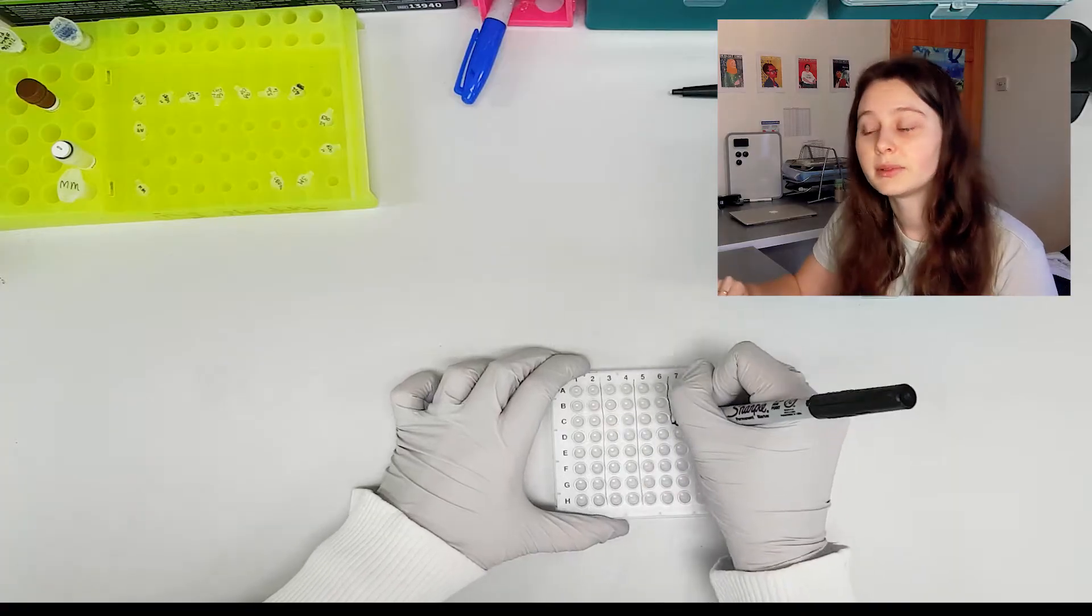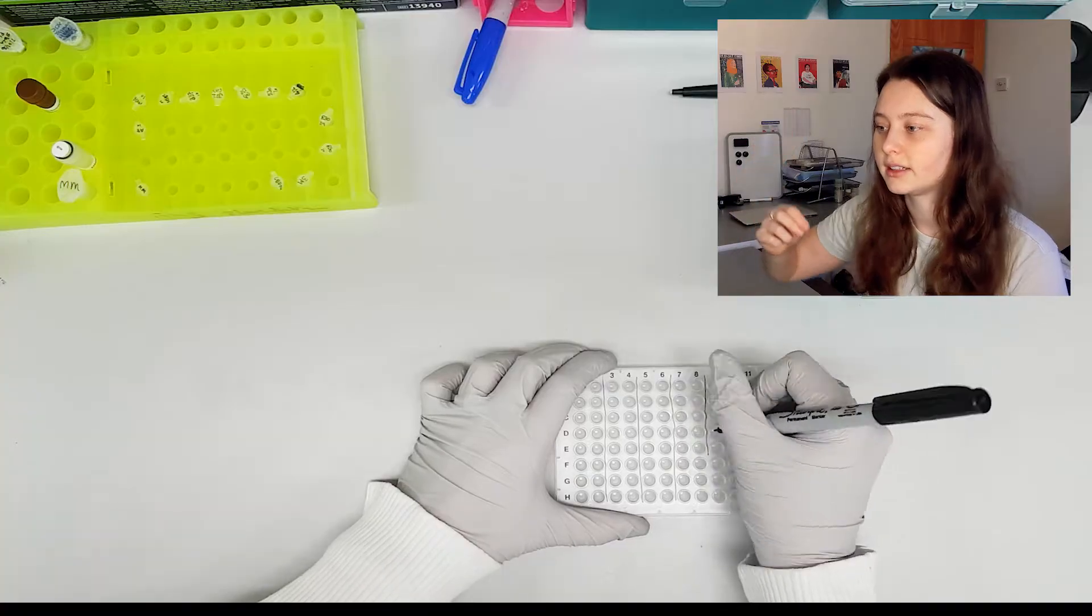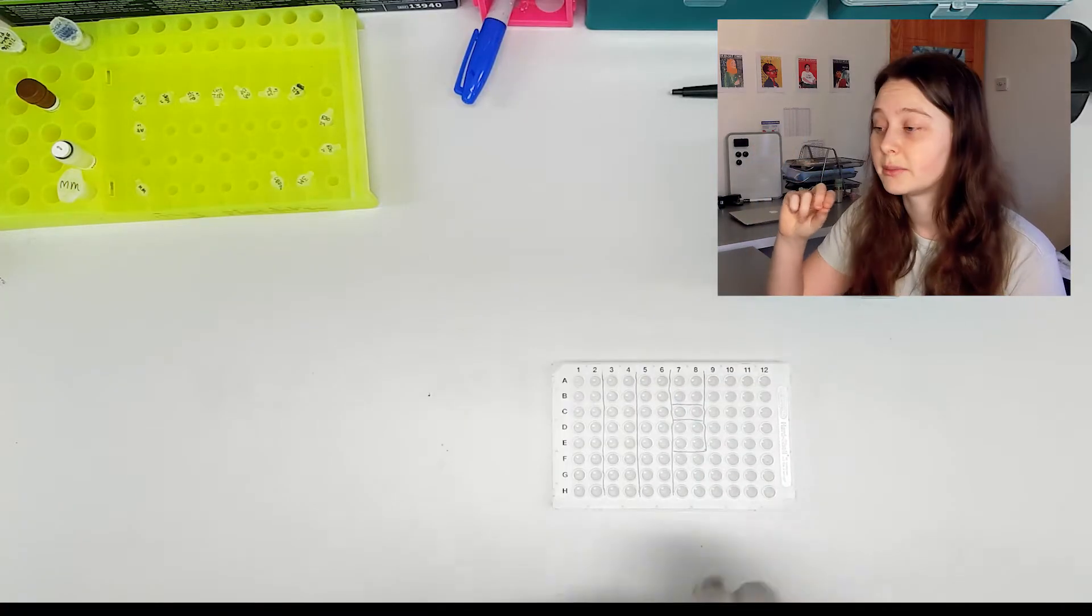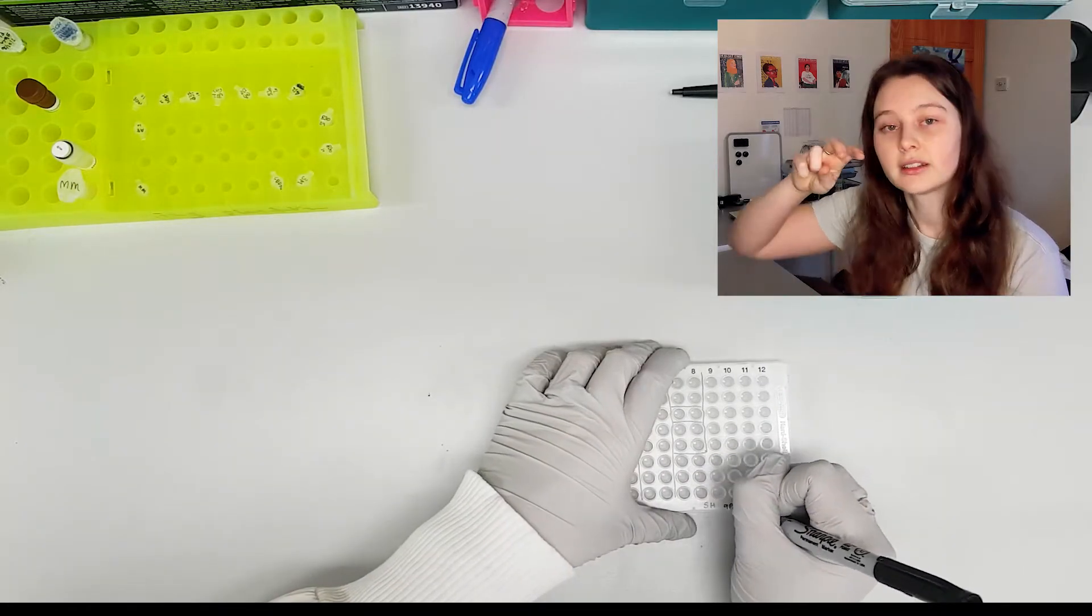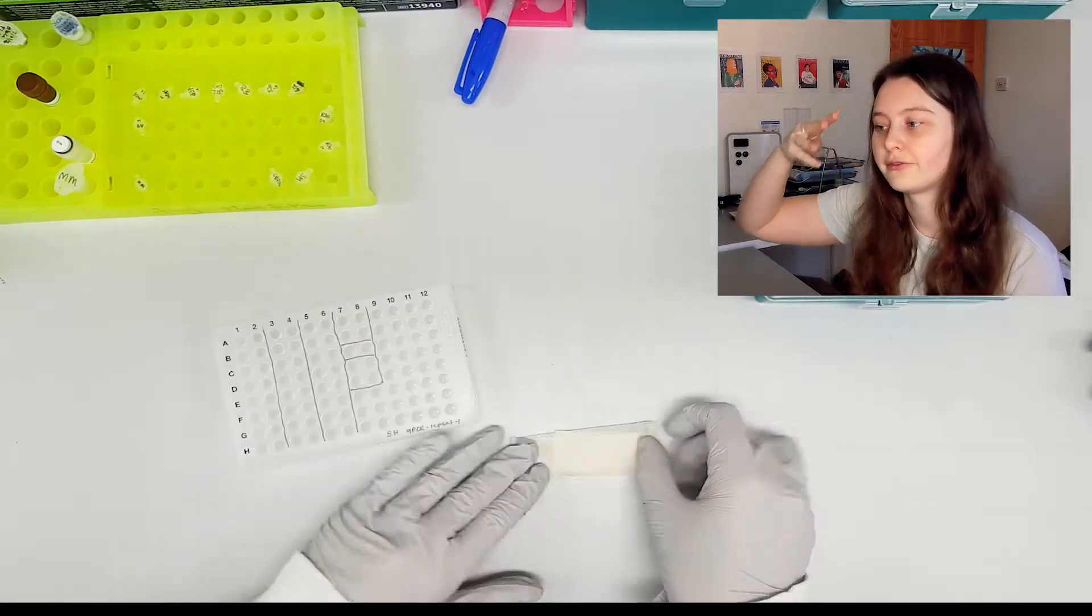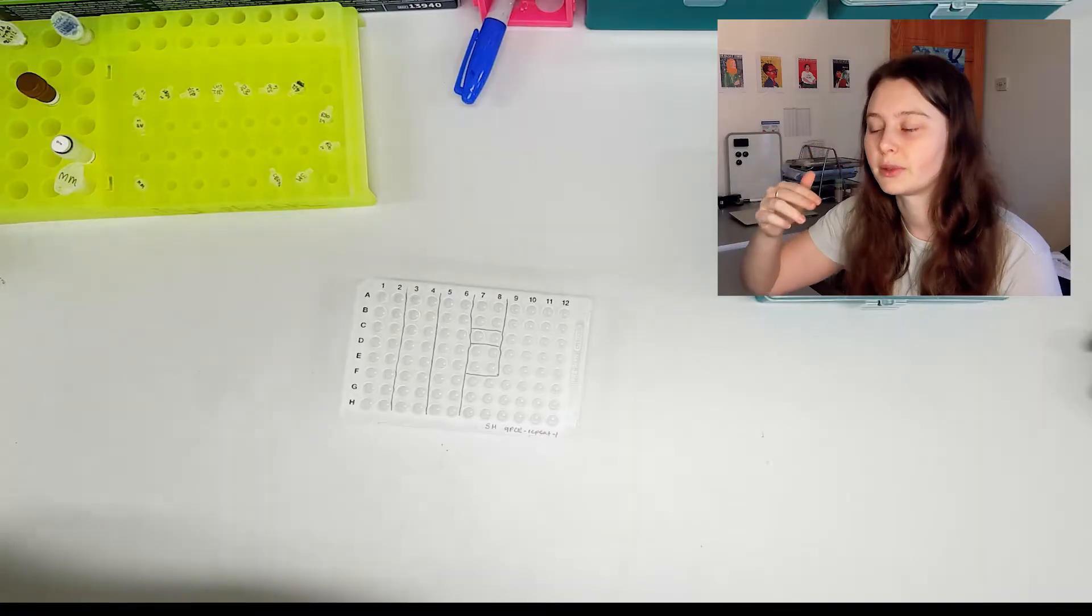So this is the qPCR plate and you can see that I'm lining out exactly where each of my samples is going to go. That little duplicate there is my negative control and the four in a box together are my two different positive controls.